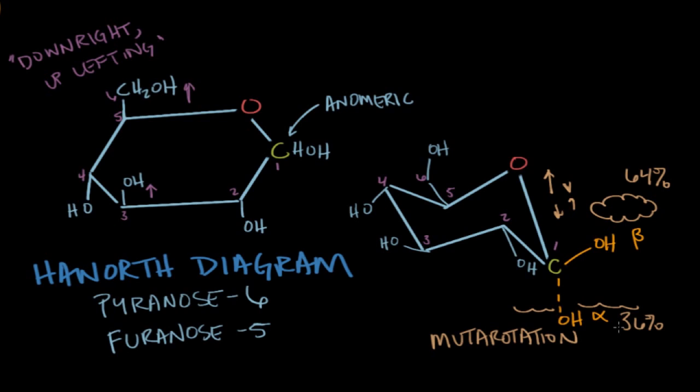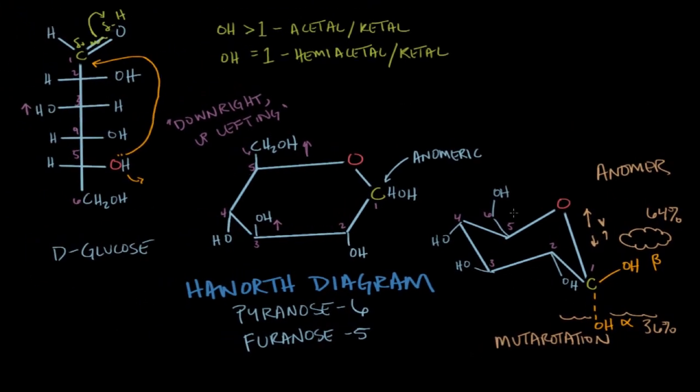So I guess the most general rule, I suppose, that you could apply to all cyclic sugars would be to say that the beta anomer, again anomer, that the beta anomer is the one with the anomeric oxygen in the cis position with respect to the last carbon.